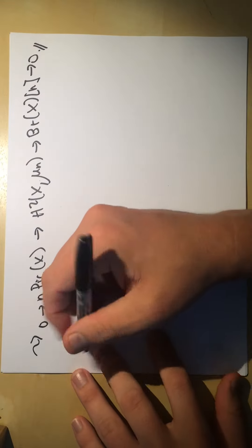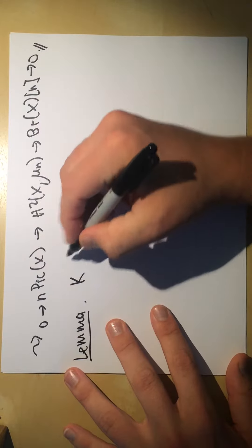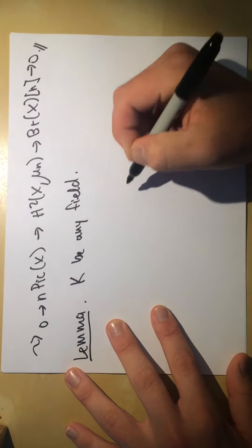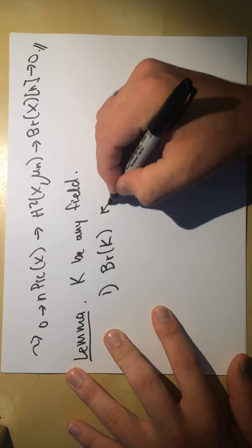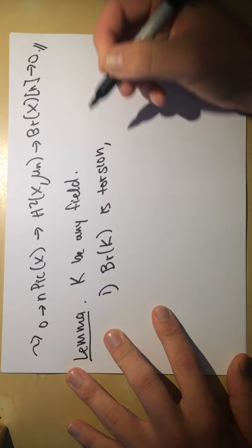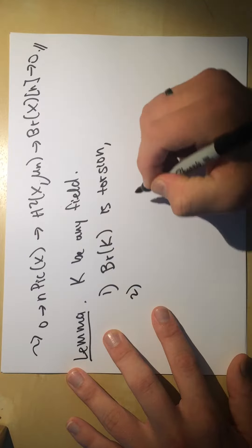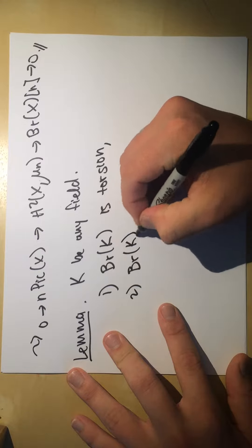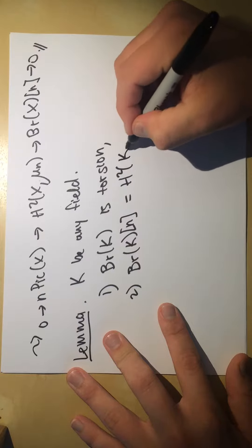Now I'll prove another lemma. Let k be any field. The first claim is that the Brauer group of k — meaning Br(Spec k) — is torsion. The second claim is that the n-torsion of Br(k) equals the baby Brauer group H²(k, μₙ).